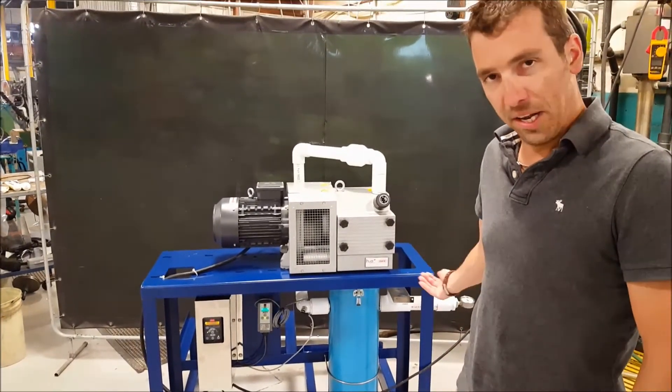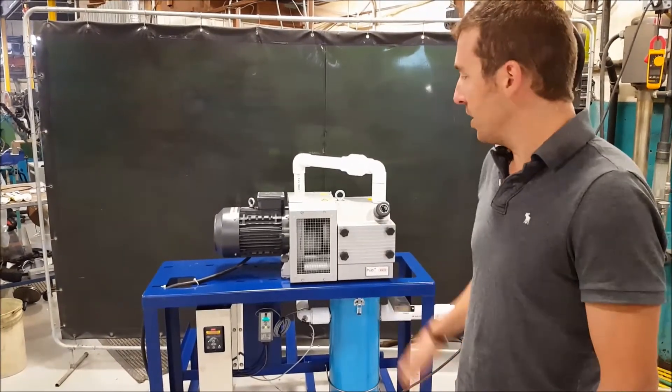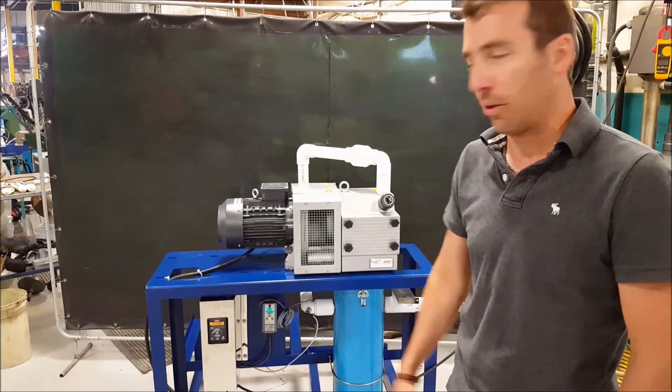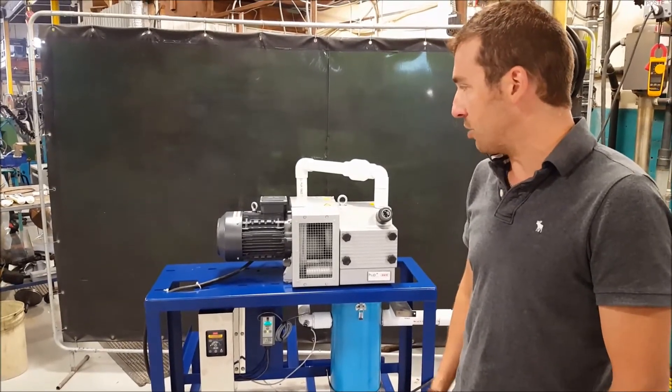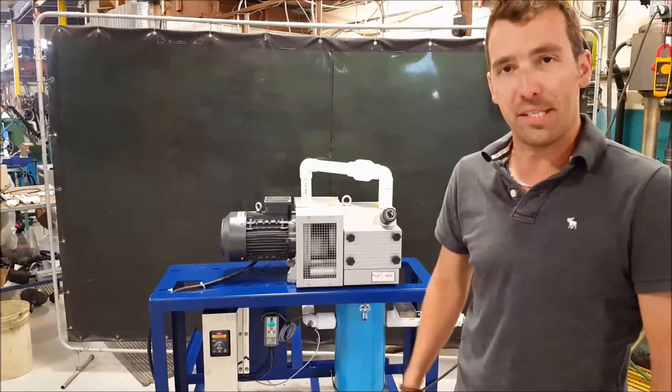So now I've created a leak. The pump sped up. Now I'm sealing it tight again. The pump will slow down as soon as it reaches that 20 inches of mercury. So it's really cost-efficient and it's available on different setups.